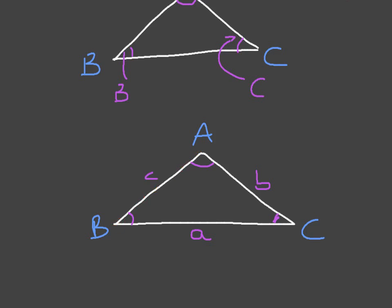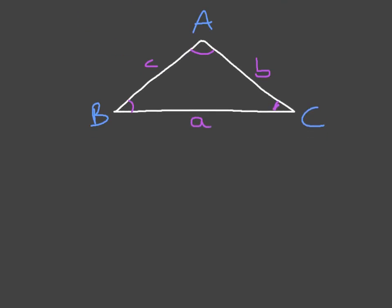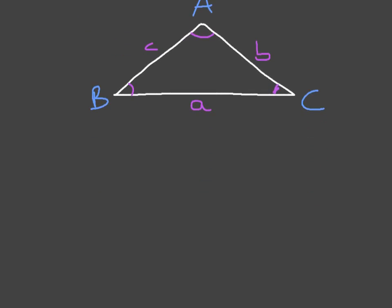It's worth practicing that a few times. To label any generic triangle, we start by labeling the vertices in capital letters. So capital A, capital B, capital C.